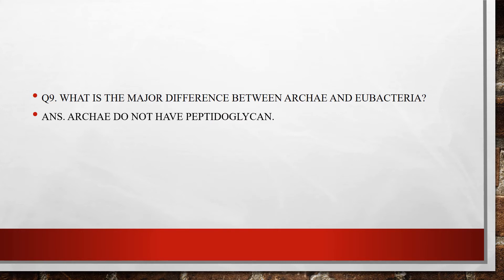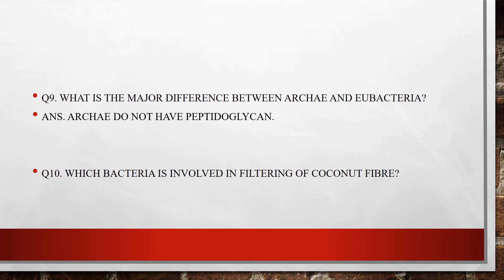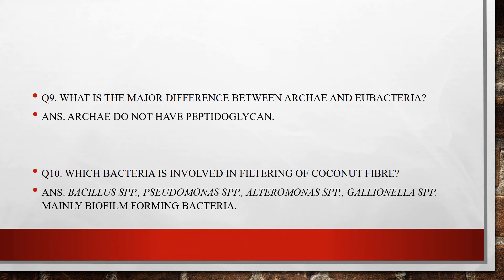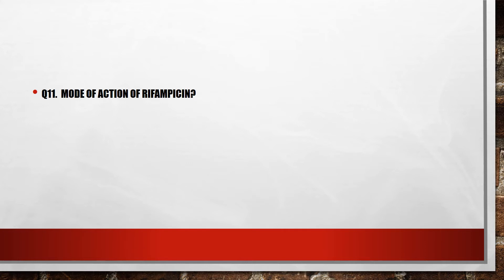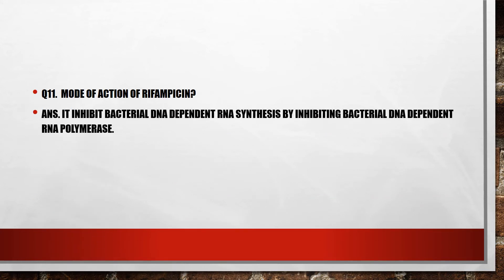Question ten: which bacteria are involved in the retting of coconut fiber? The answer is Bacillus species, Pseudomonas species, Clostridium species, and Gallionella species — mainly organisms that form biofilm. Question eleven: what is the mode of action of Rifampicin? The answer is it inhibits bacterial DNA-dependent RNA polymerase.